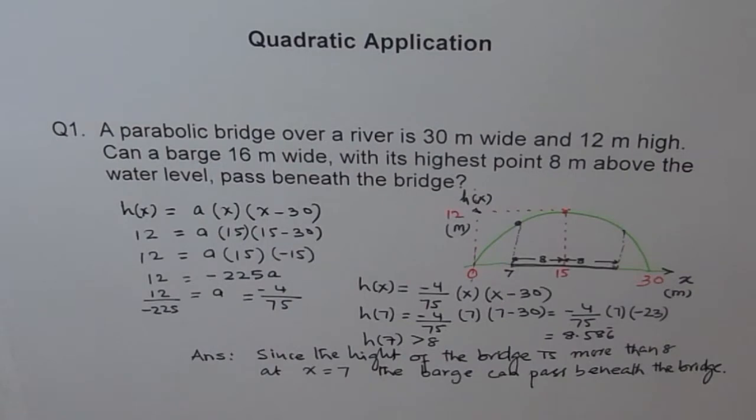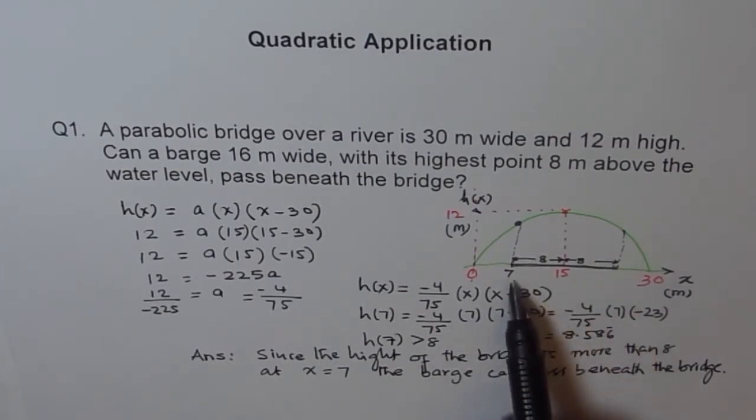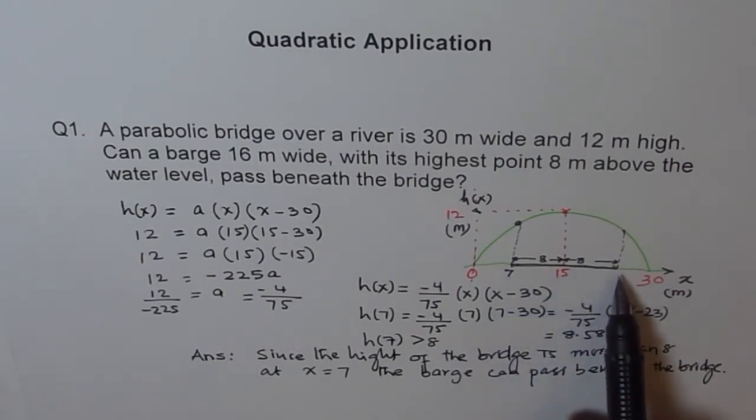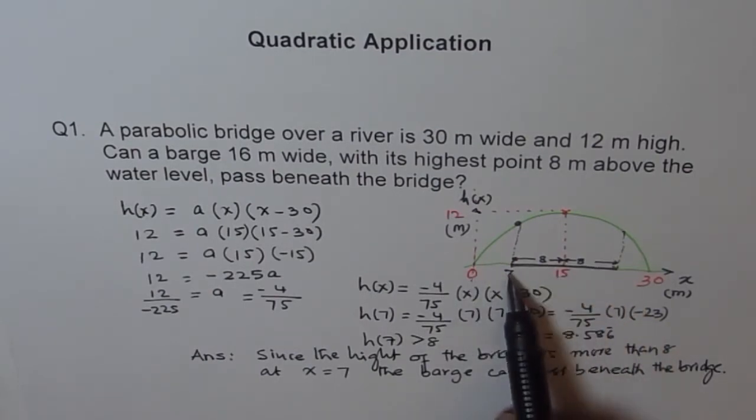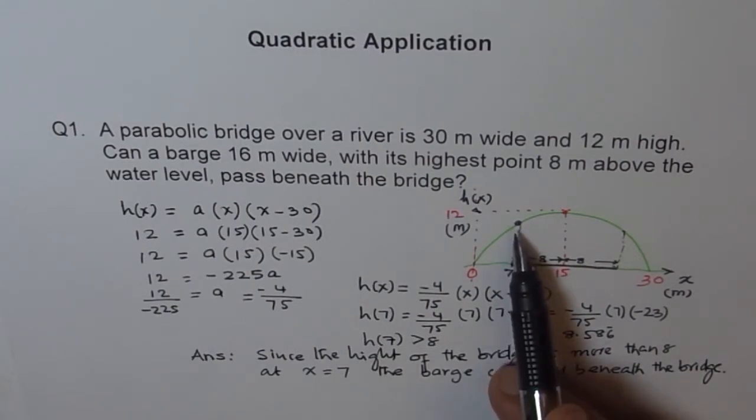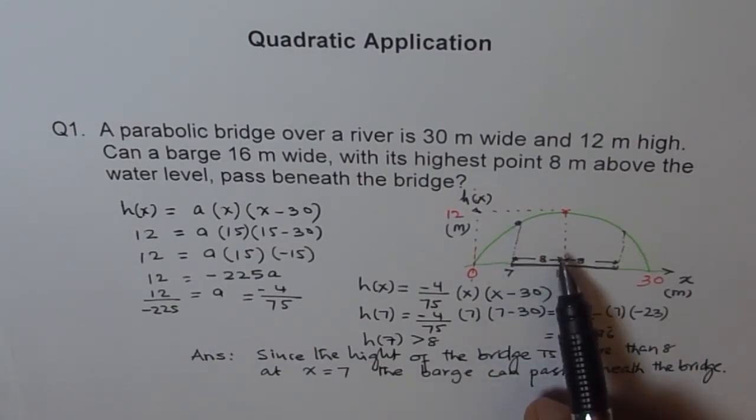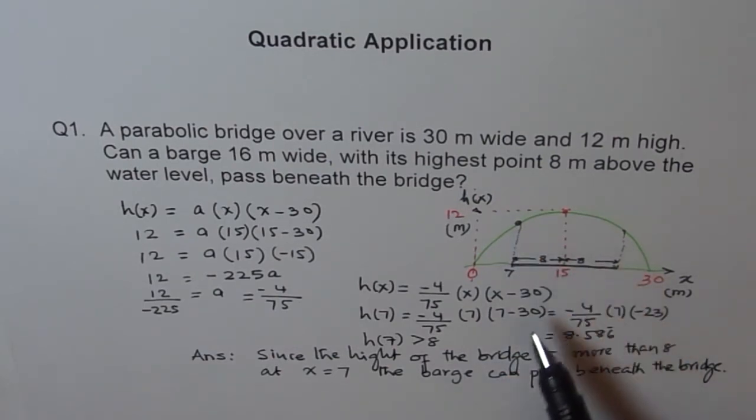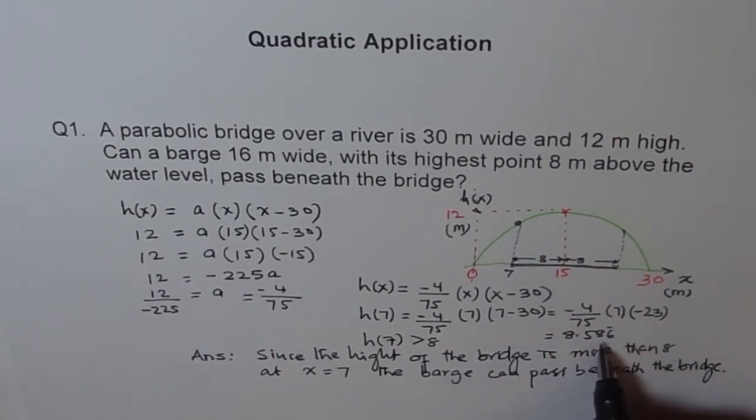So here, what we did was, first we found the equation of the parabola. First thing is always to sketch your diagram, try to understand what the problem is and then define your variables, find the equation of the parabola and see the constraints. We saw the barge will be going right from the center, 16 meters wide, so 8 on this side and 8 on that side. If it is 8 on this side, that means from 0, 15 minus 8 is 7. So at 7, we need to ensure that the height is more than 8 for it to pass through. If it is less than 8, it can't. So we found out it was 8.586 meters and since it is more than 8, so it can go. So the answer is yes, it can.